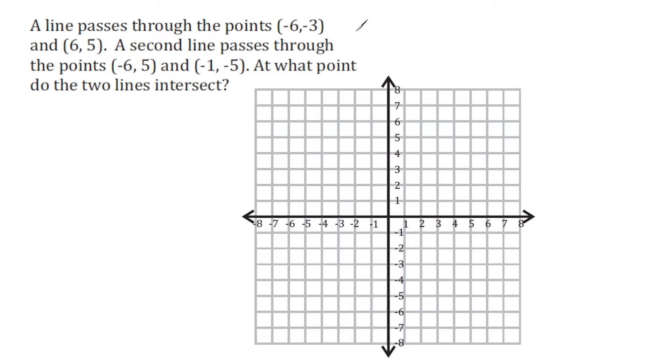Okay, so what we want to do here first is plot this point, negative 6, negative 3. So negative 6 is here, and then we go down 3, alright? This point is positive 6, positive 5, so we go over to 6 and up 5, and we create a line that is passing through those two points.